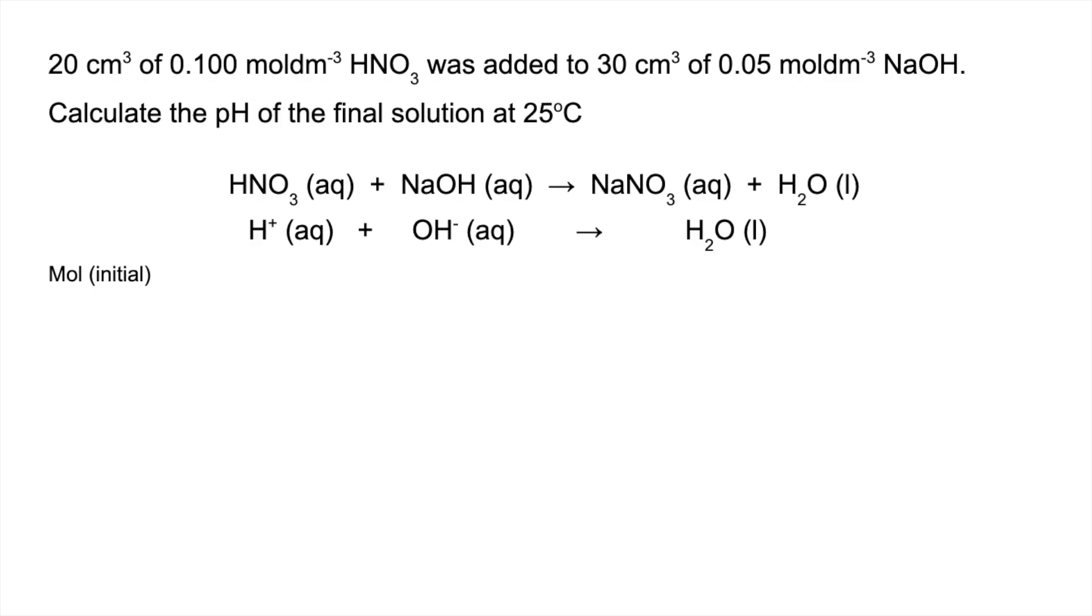Obviously with the two in this question, they're both monobasic, and so the moles of acid will be the moles of H+, and the moles of alkali will also be the moles of OH-. So we've got 0.0020 moles of acid or H+, that's just from concentration times volume, and we've got 0.0015 moles of alkali and therefore OH-.